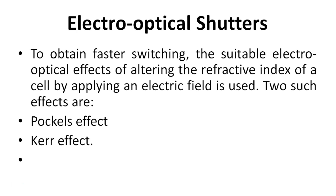Electro-optical shutters: To obtain faster switching, the suitable electro-optical effects of altering the refractive index of a cell by applying an electric field are used — that's why the name is electro. Two such effects are Pockel's effect and Kerr effect.